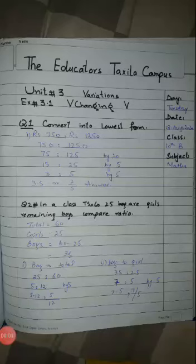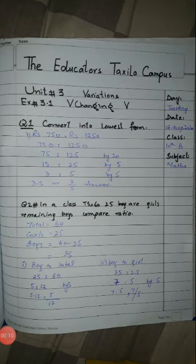Assalamualaikum students, good morning. Today we are going to start a new chapter — Unit Number 3: Variations. Variations mean change in something, change in value. Since this is a new unit, you have to make an index on your notebooks with the unit number, name, page number, exercises, and summary.